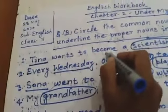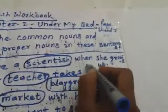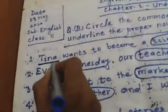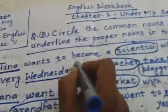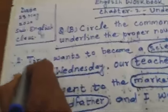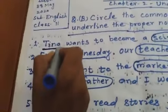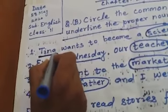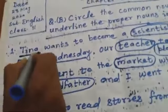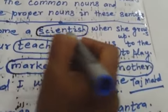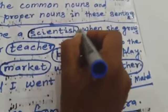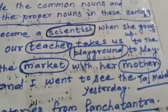Sentence 1: 'Tina wants to become a scientist when she grows up.' Here, 'Tina' is a proper noun — she wants to become a scientist when she grows up. So we underline 'Tina' as the proper noun. 'Scientist' is a common noun, so we circle it.